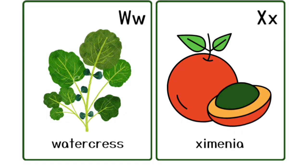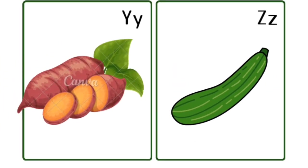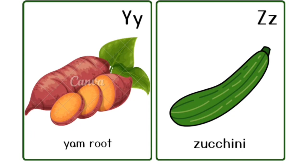U is for umbrella, a-a-umbrella. V is for violin.